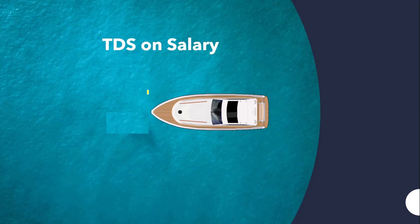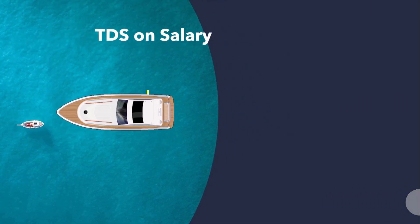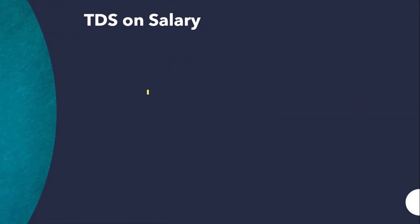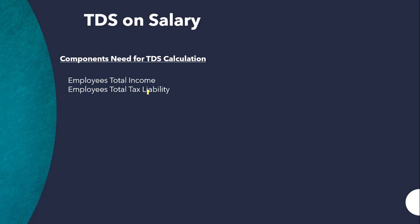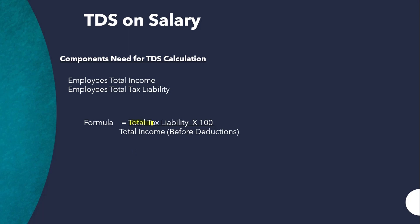Hello friends! In this video we're going to calculate TDS on salary. To calculate the average rate of TDS on salary, we need two components: the employee's total income and the employee's total tax liability. The formula is: TDS rate = (Total Tax Liability × 100) / Total Income.